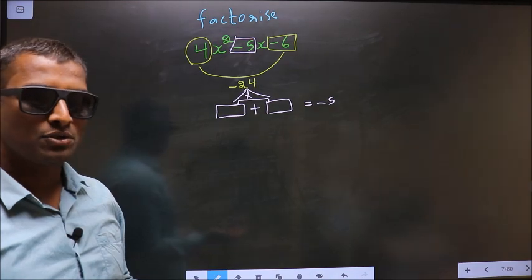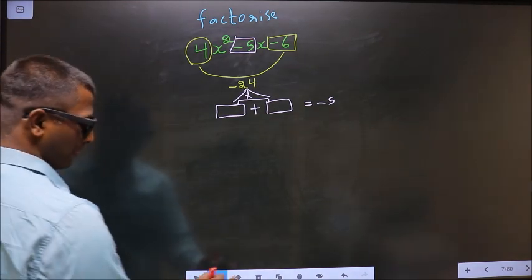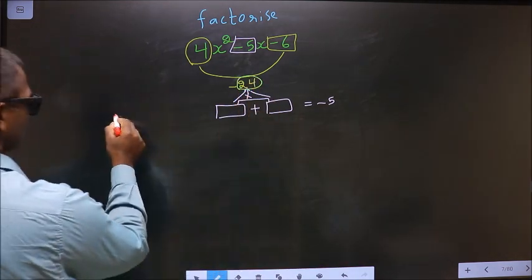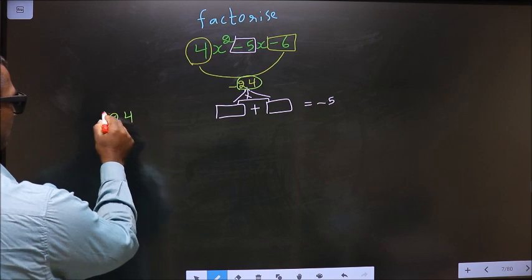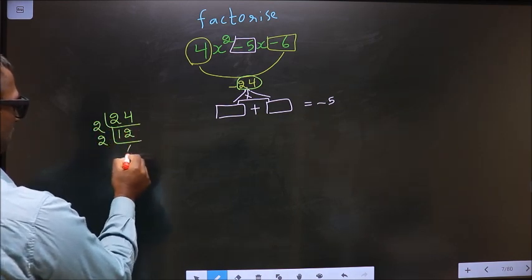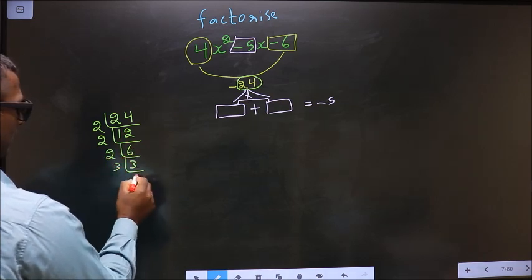Now, to get those two numbers, we should take LCM of 24. So here, 24: start with 2, 2 ones, 2 twos, then again 2, 6, 2, 3, 3 and 1.